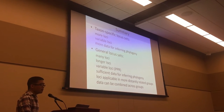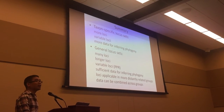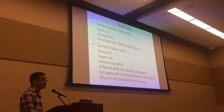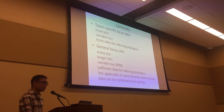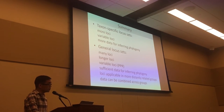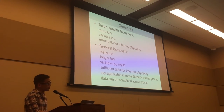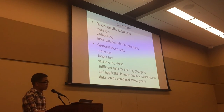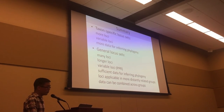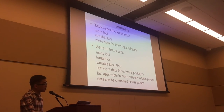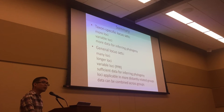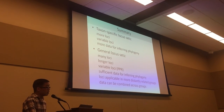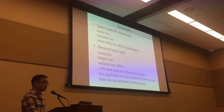To summarize: for the taxon-specific set, we were able to identify much higher numbers of variable loci, which provided enough data to resolve a well-supported phylogeny. For the general locus sets, which required fewer genomic resources, we identified fewer loci — though still dozens to hundreds per set — which were longer on average and in some sets comparably variable, and provided sufficient data to infer a well-supported phylogeny. We also saw that these loci were applicable in more distantly related outgroup samples, meaning the data can be combined across groups for larger analyses.